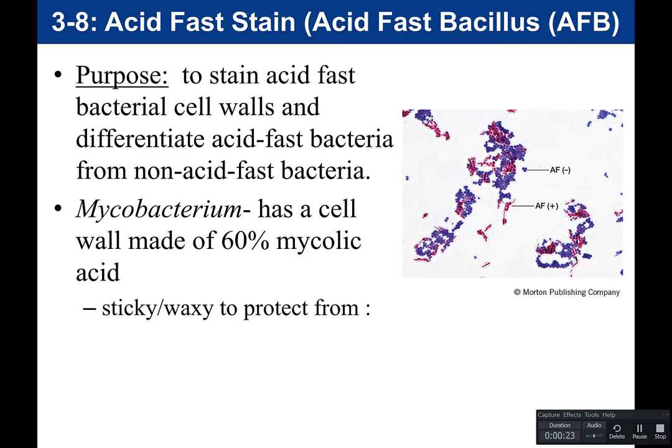The acid-fast stain will allow us to differentiate between acid-fast positive and acid-fast negative. Acid-fast refers to the fact that this type of bacteria has a cell wall made of 60% mycolic acid. The bacteria that has this is in the genus Mycobacterium — not to be confused with Mycoplasma, which is a different type of bacteria that is extremely small and lacks a cell wall.